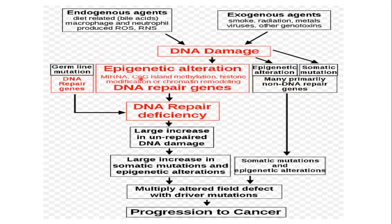When there is DNA damage, we end up with epigenetic alterations and somatic mutations. These include micro RNAs, CpG iron methylation, histone modification, and chromatin remodeling affecting DNA repair genes. Germline mutations can also occur in sperm cells and eggs. When there is DNA repair deficiency, we end up with a large pool of unrepaired DNA damage, leading to an increase in somatic mutations and genetic alterations. These cells keep multiplying with driver mutations, eventually resulting in progression to cancer.